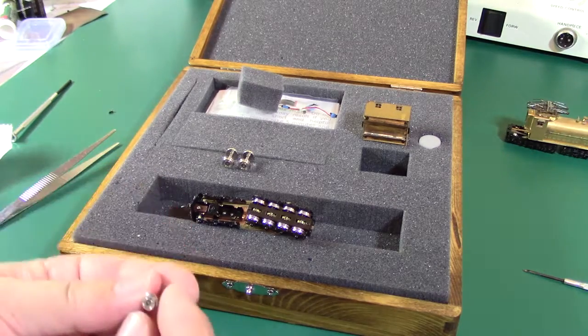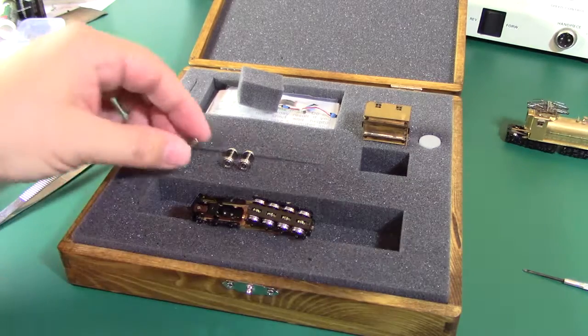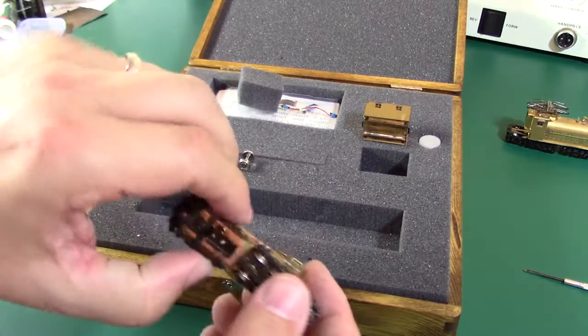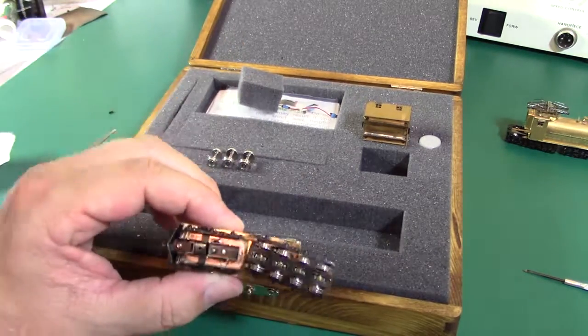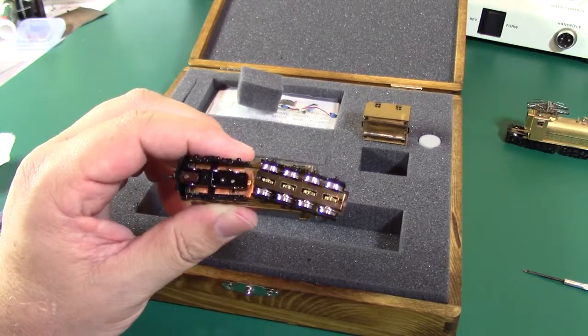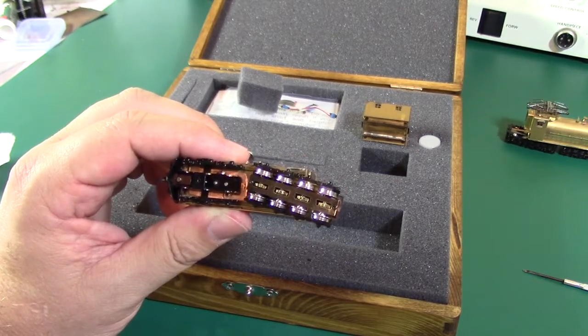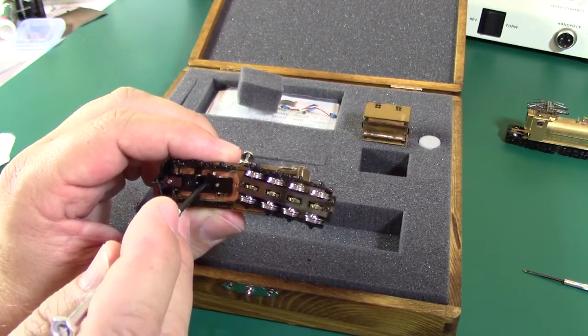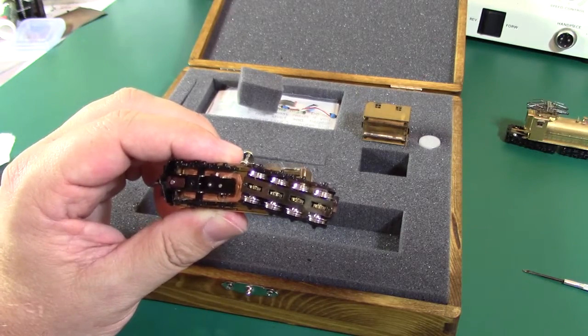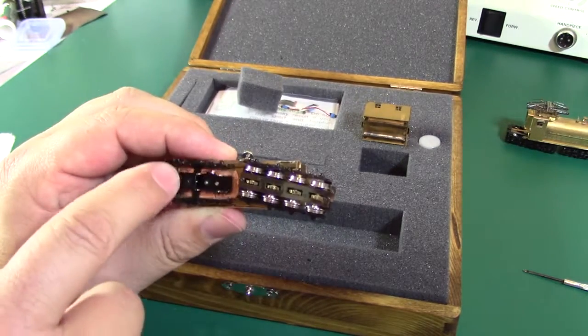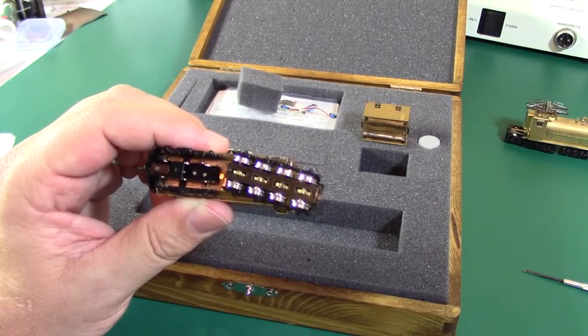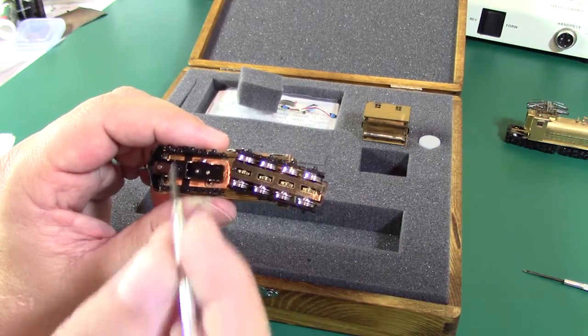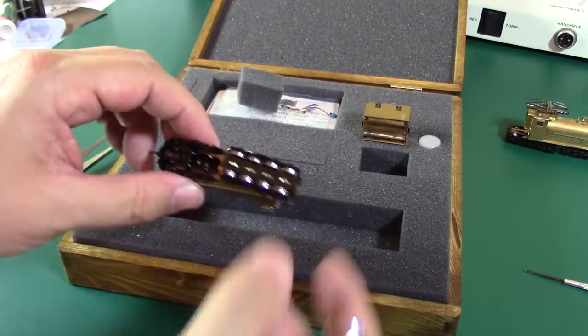Since we're talking about maintenance, there is one important thing to talk about while we're in the neighborhood. This front truck has a screw that holds it on and that screw can come loose. So there is a dab of super glue on the threads on this side of that truck, so that screw will be able to pivot without coming loose. Super glue breaks loose easily, so if you ever have to disassemble the locomotive you can easily add some back and make the screw tight again.